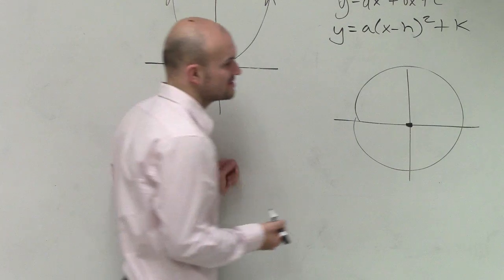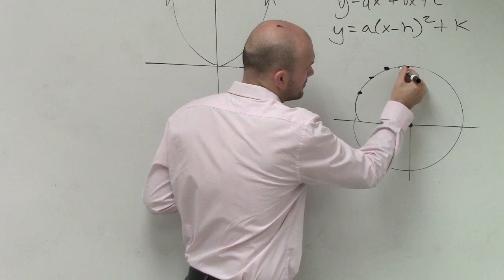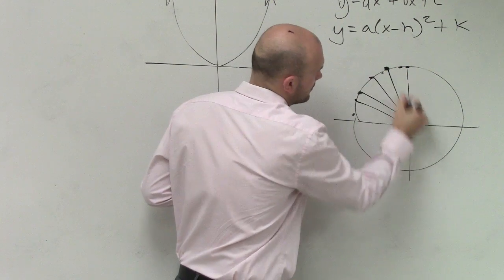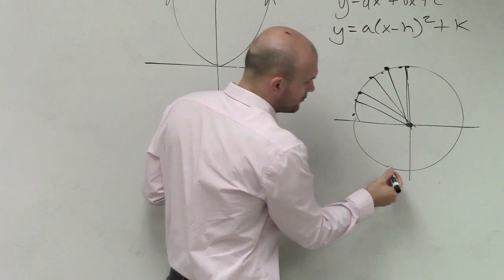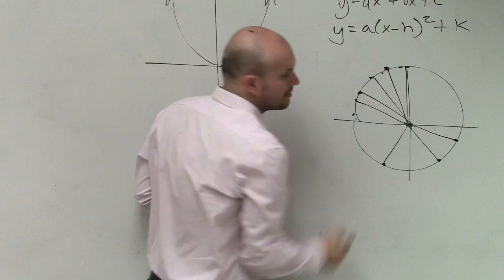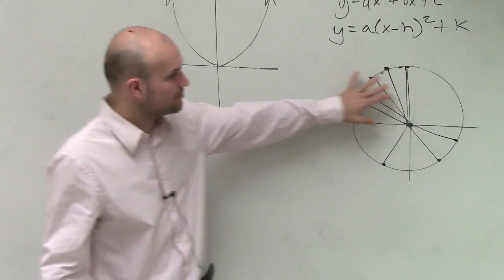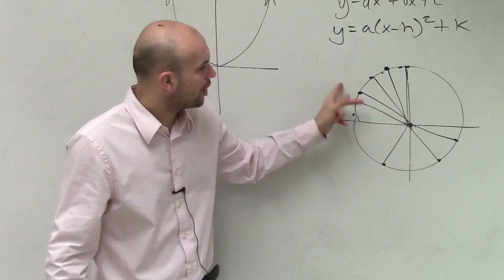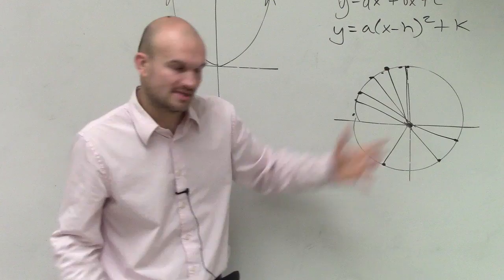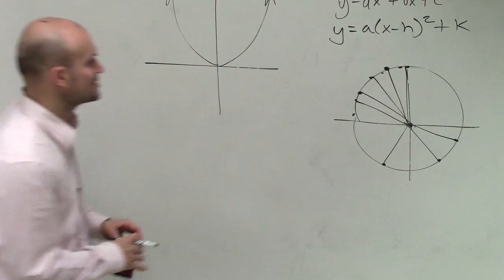One definition that we could use is a circle is a set of points. There's infinitely many points around that are all equal, or what we call equidistant, from the center. You can kind of think of little spokes on a bicycle. Each one of these points are all equal distance to the center. Does everybody agree with that? OK. So that's just a rough little definition of a circle, which we'll get into further in the next chapter.